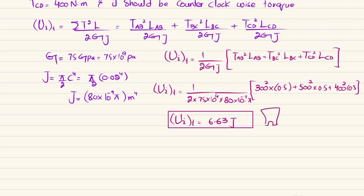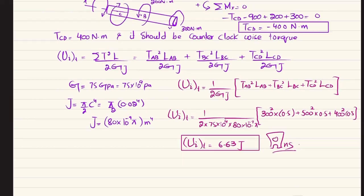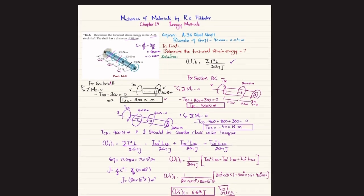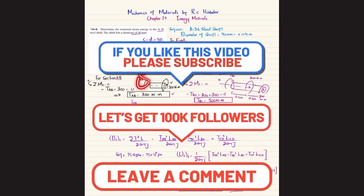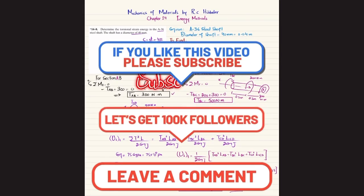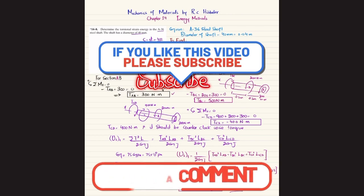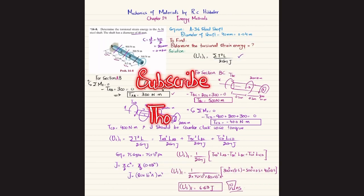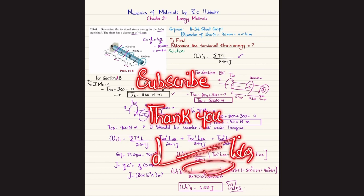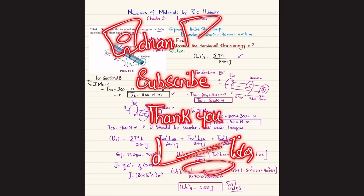So 6.63 joules is the torsional strain energy stored in this shaft. That was all about problem 14-8. I hope you enjoyed this video and learned from it. If you are new to my channel, please subscribe and press the bell icon for notifications. If you have any questions, ask in the comment section, and please share the video with your friends.